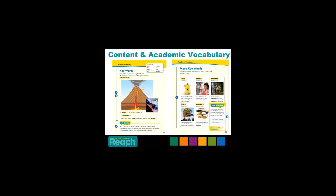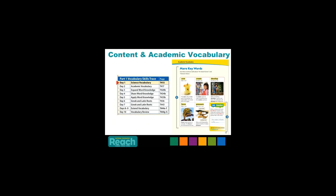Now look at a page from the student anthology where the academic vocabulary words are introduced. Built-in supports include photographs, diagrams, the part of speech, pronunciation, and a student-friendly contextualized example sentence. Since the goal with Reach is to get students engaged in academic talk, we provide structured opportunities to talk together in all our lessons. As students move through each unit in Reach, they'll be immersed with these words as they expand and share their word knowledge, learn vocabulary strategies, and review these words prior to assessment.